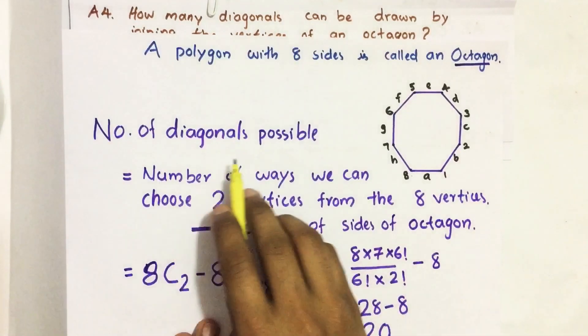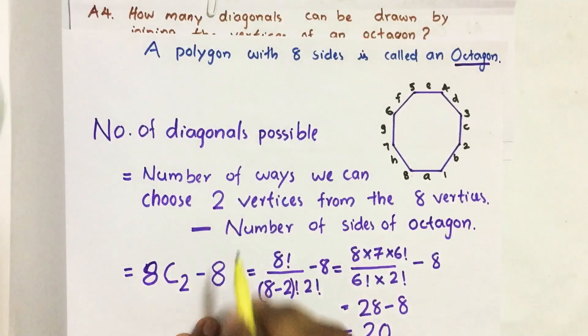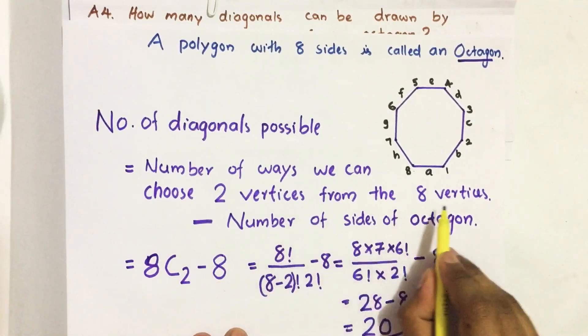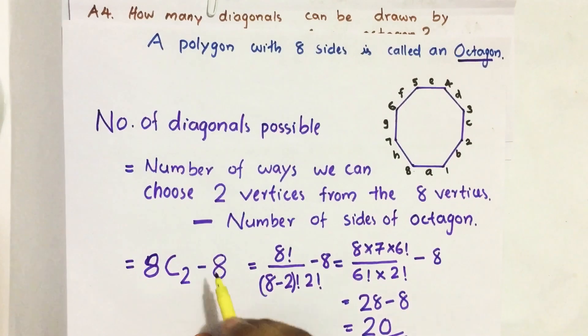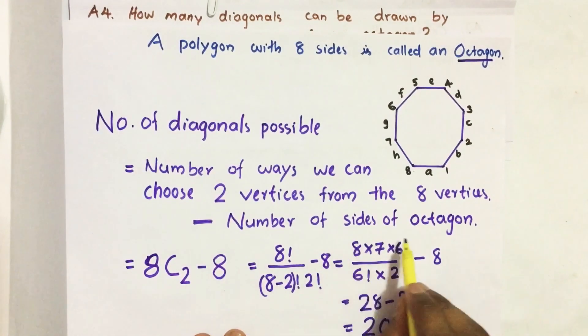Therefore, number of diagonals possible equals the number of ways we can choose 2 vertices from the 8 vertices minus the number of sides of octagon.